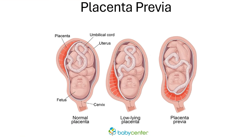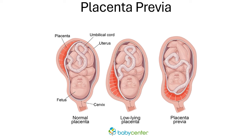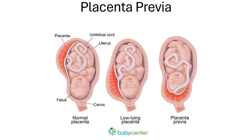In a normal pregnancy, the fetus lies inside the uterus and the head of the fetus — or the presenting part — will be close to the cervix, while the placenta lies high up in the uterus. However, in some situations the placenta can lie lower, called a low-lying placenta, and when it is very close to the cervical opening it is called placenta previa.